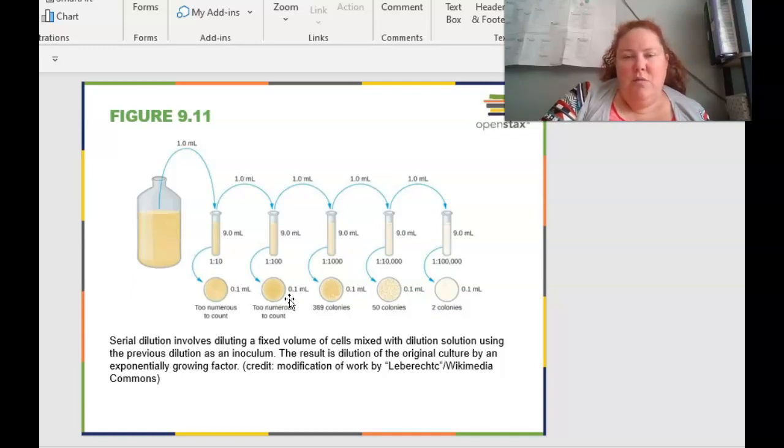Another thing that we do want to talk about is serial dilutions. I do believe that we do one of these in labs. So basically, a serial dilution involves diluting a fixed volume of cells mixed with a dilution solution using the previous dilution as the inoculum or basically the supplier. And the result is going to be a dilution to the original culture by an exponentially growth factor. So if we have one milliliter of original sample and we put it into a test tube with nine milliliters of broth, then it's a one to ten dilution. If we mix that and take a milliliter and do that, then we now have a one to one hundred different dilution. This is a serial dilution. You can see that basically it decreases the amount of cellular concentration so that we can actually count it and get a reliable result.